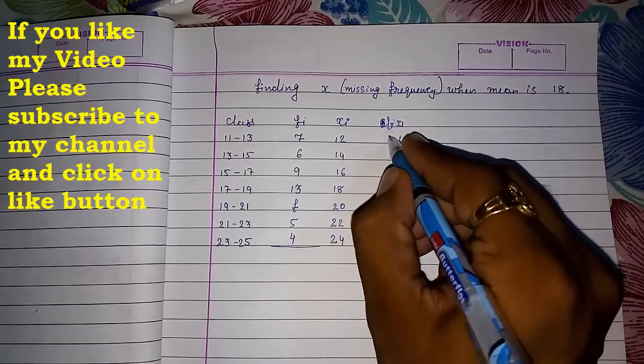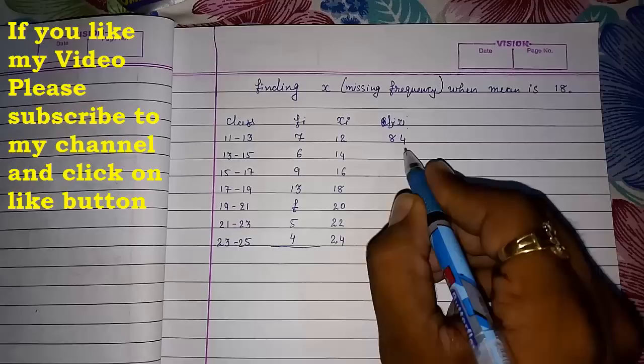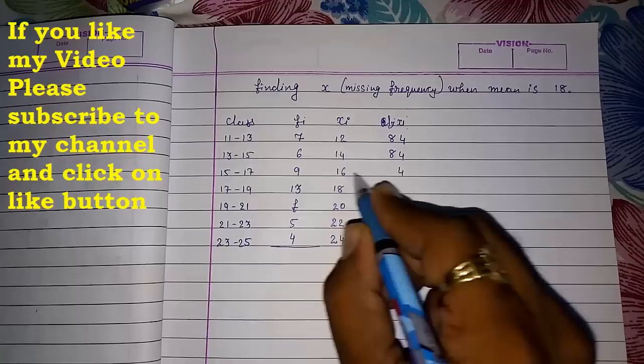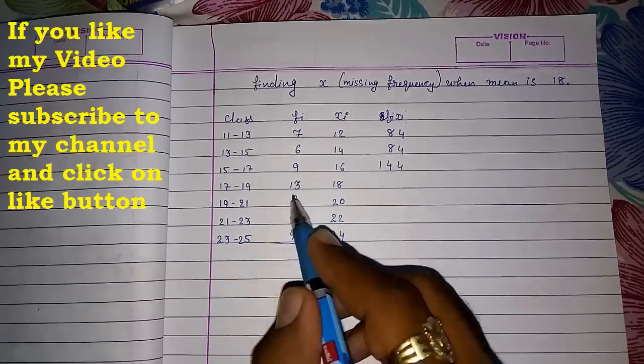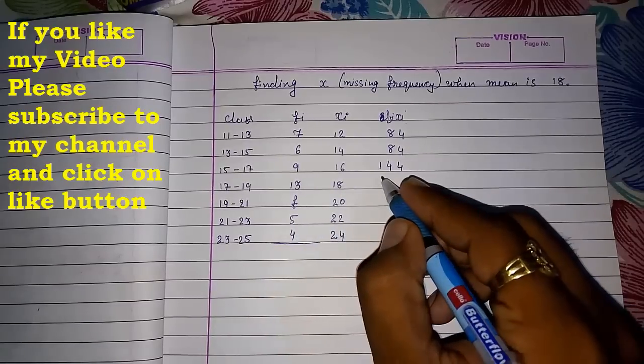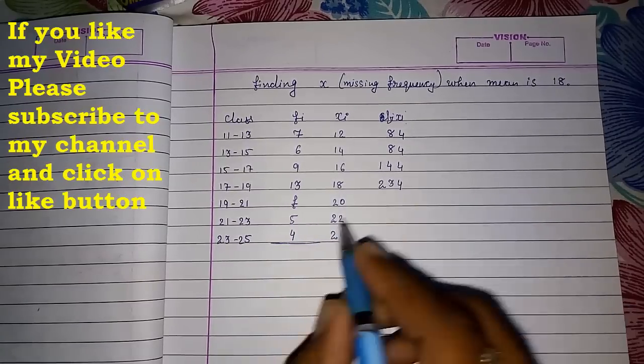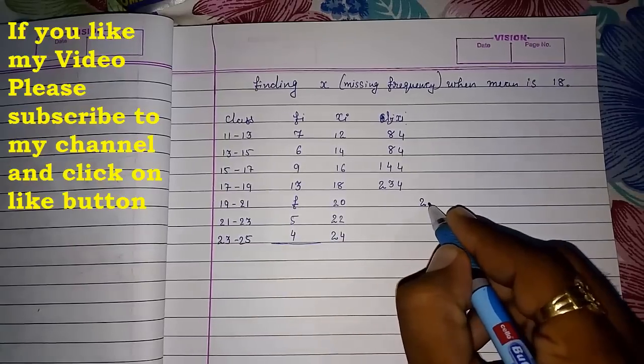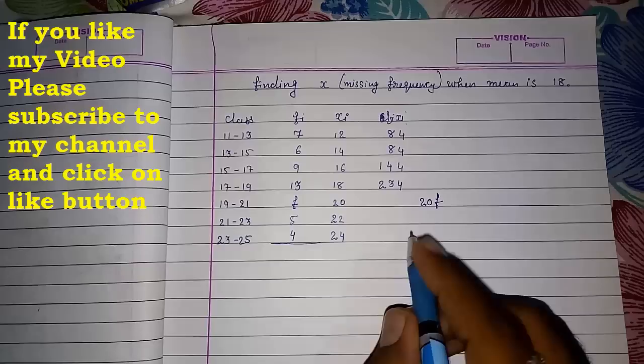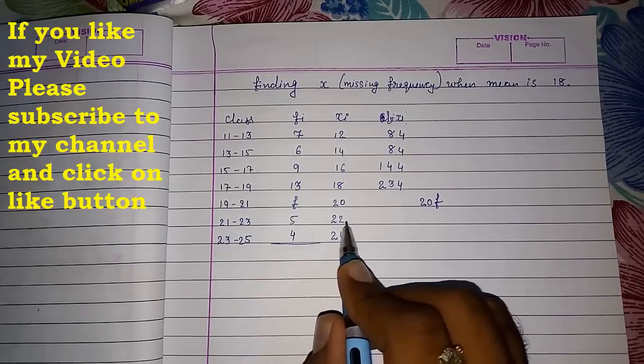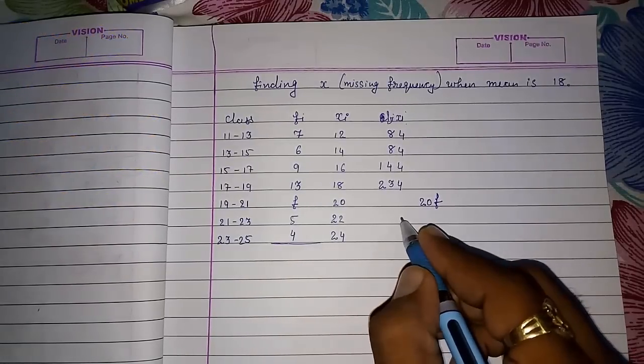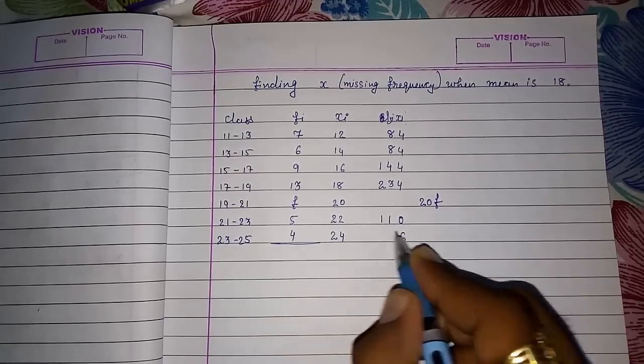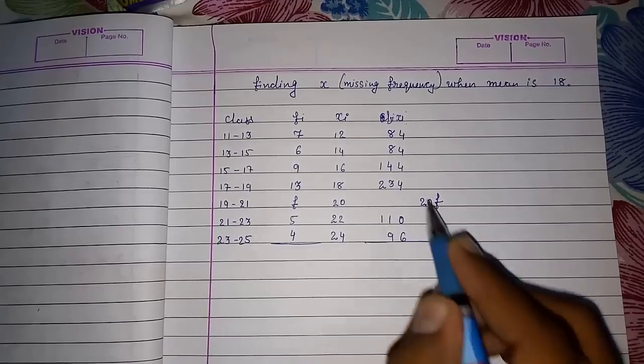7 into 14 is 84, 6 into 16 is 84, 9 into 18 is 144, 13 into 18 is 234. Now F into 20, so we will not put F into 20 here, we will write it down here. Why I am not writing here, that I will tell you later. Now 5 into 22, so 110, and then 4 into 24 is 96.